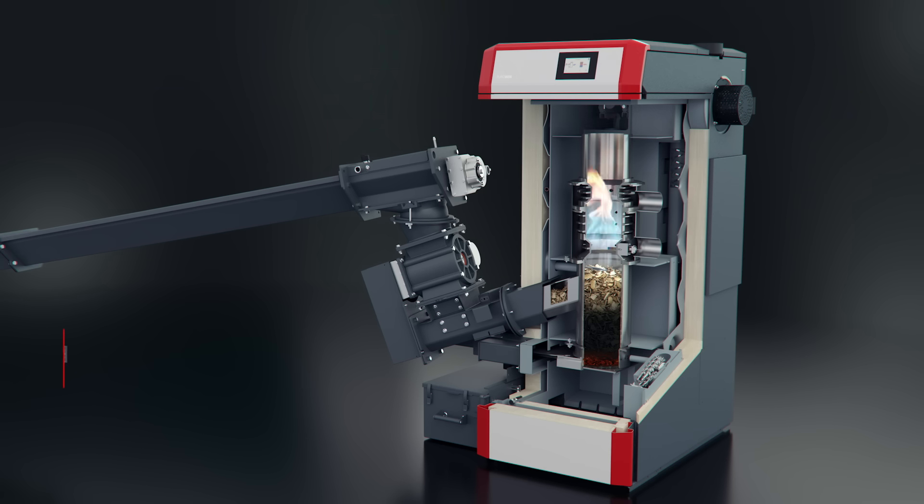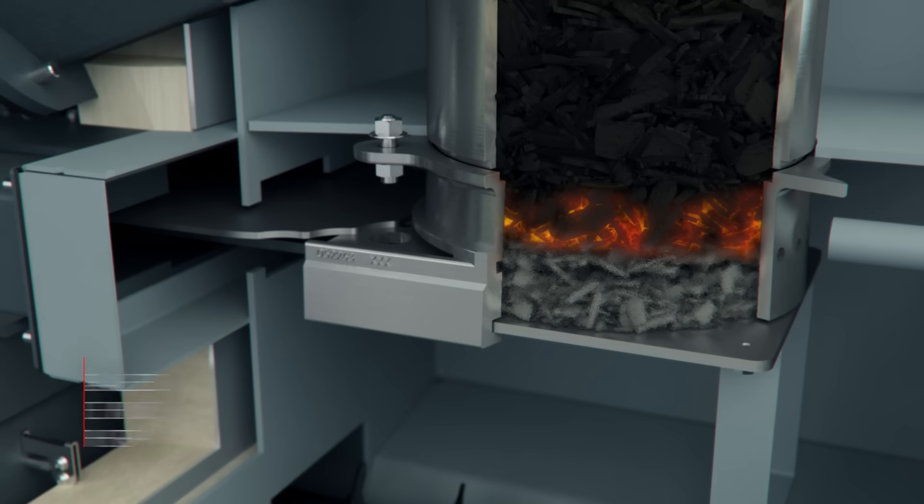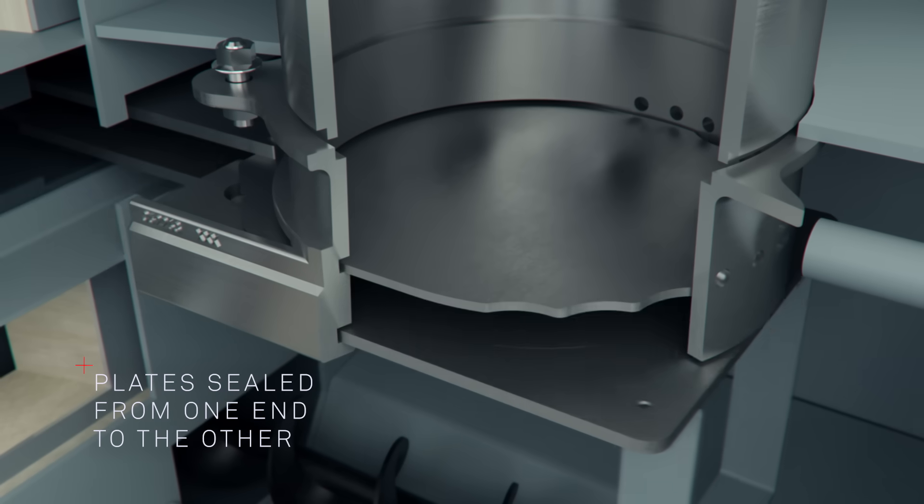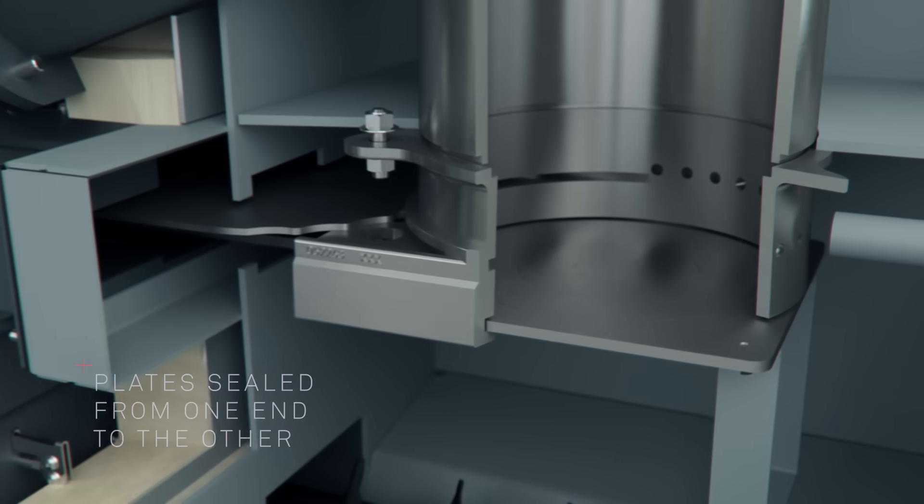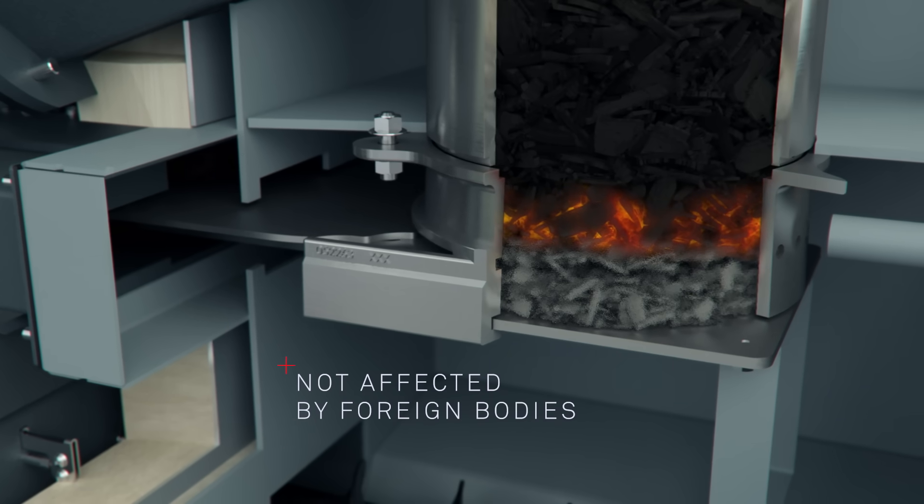Thanks to the special design of the patented twin ash removal plates in the PuroWin, the gasification boiler doesn't have to be shut down when ash is removed. The ember bed slide and ash removal plate are designed as plates sealed from one end to the other, preventing foreign bodies from getting stuck. Both plates also have unique levels of robustness and are not affected by foreign bodies.